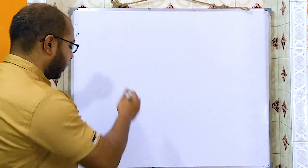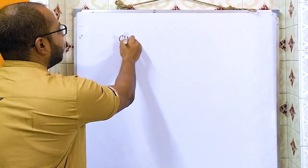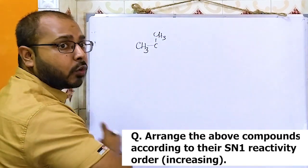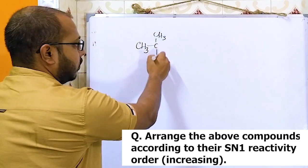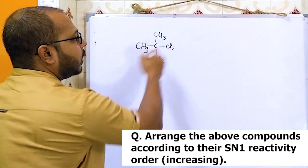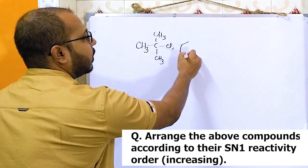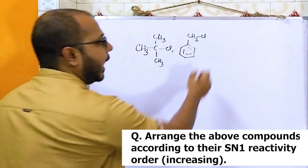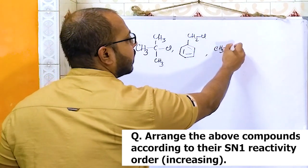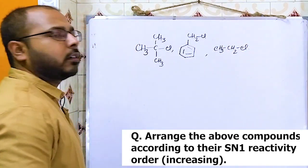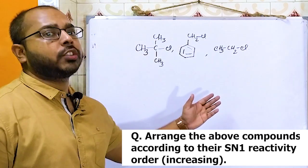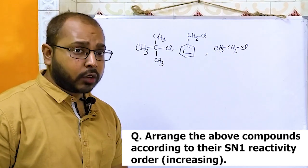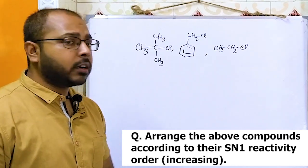We have a question where we have to arrange compounds in order according to their SN1 reactivity. The examples given are: tertiary butyl chloride, benzyl chloride, and ethyl chloride. We have to arrange them according to their increasing order of SN1 reactivity.